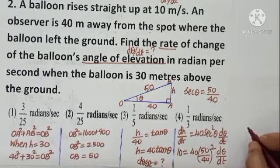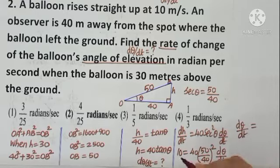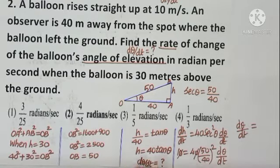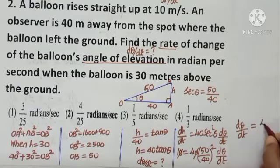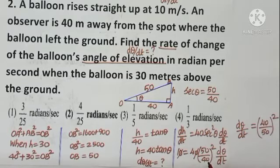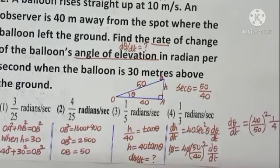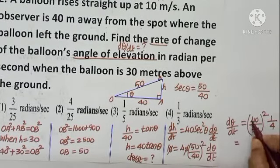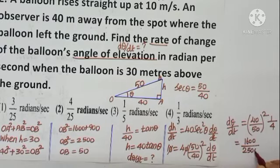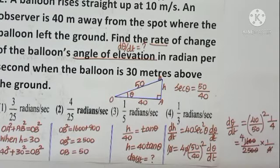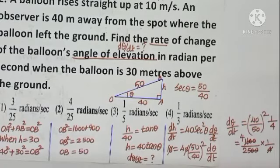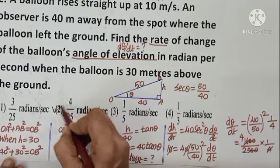Simplifying: dθ/dt = 10 · (40/50)² / 40. As I reciprocate: (40/50)² = 1600/2500. With the factor of 1/4, cancelling: the answer is 4/25. That is option 2, which is the right choice.